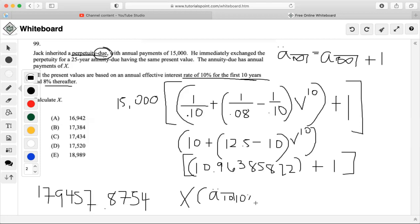And then plus the next 15 years, which will be at 8%. But we also have to compensate for what is happening here by discounting back by 10 years at 10%, like we did for the perpetuity.